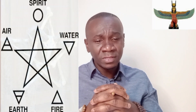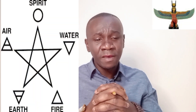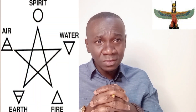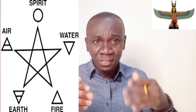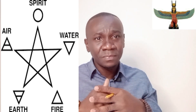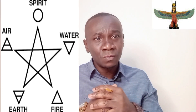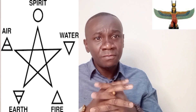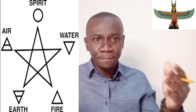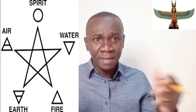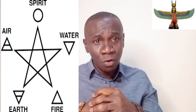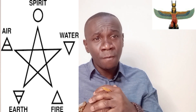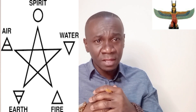The five elements are representing air, water, fire, earth, and of course spirit. So every physical matter on this earth is composed of one or more of these elements.